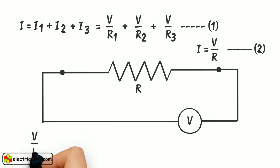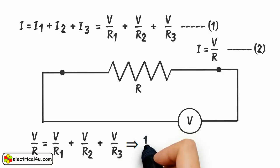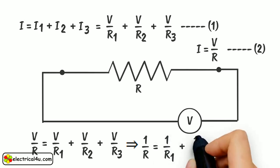From 1 and 2, we get, V by R equals V by R1, plus V by R2, plus V by R3. Now, by cancelling V in both sides we get, 1 by R equals 1 by R1, plus 1 by R2, plus 1 by R3.